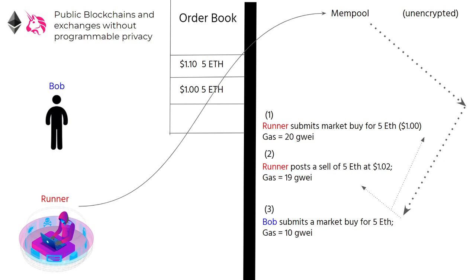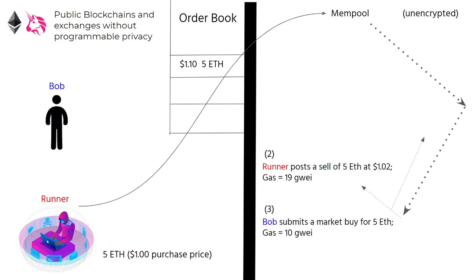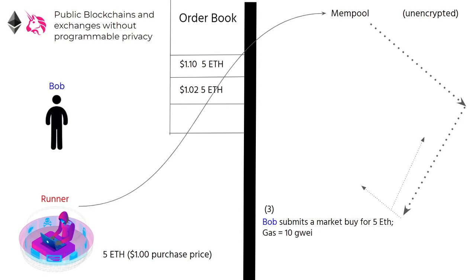Now let's complete the transactions in order of submitted gas price. First, the runner purchases the first 5 ETH available on the orderbooks. Next, the front-runner has their second transaction executed for 19 Gwei, posting a sell of 5 ETH at $1.02 on the orderbook. Finally, Bob's transaction using 10 Gwei is on deck for his 5 ETH purchase to execute.